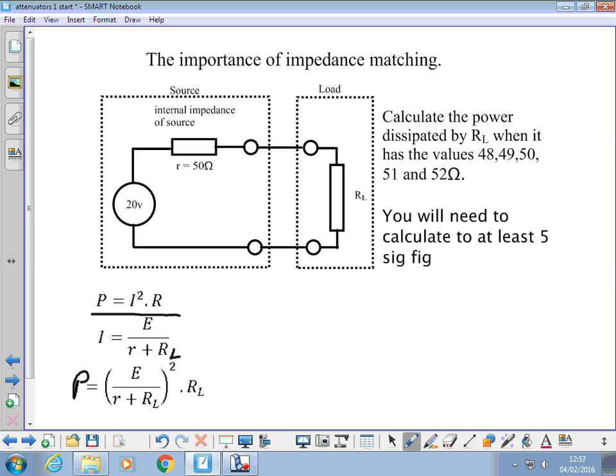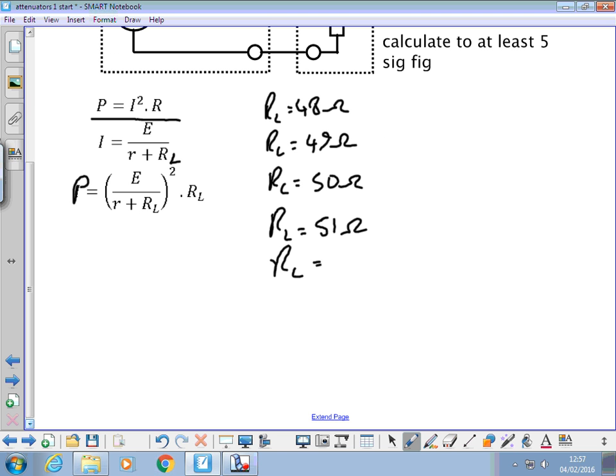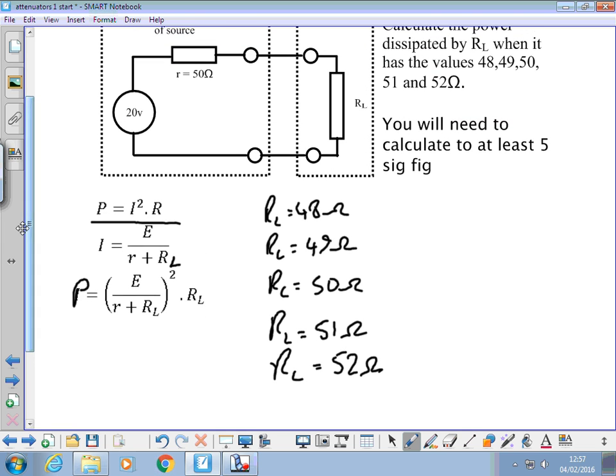P is equal to E over little r plus RL all squared times RL. So what I want to know are: what is the power when RL is equal to 48 ohms, RL equals 49 ohms, RL 50 ohms, RL 51 ohms, and RL 52 ohms. So if we just quickly calculate those, I'm going to put the results in there. I'll pause for a minute.